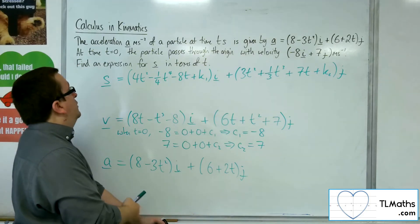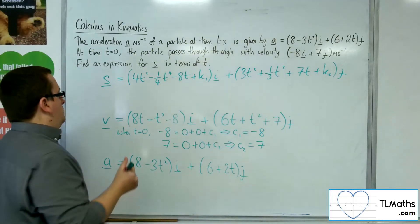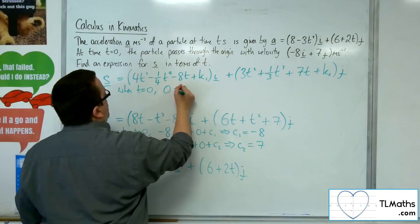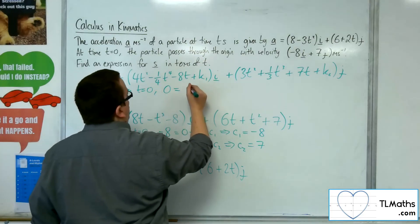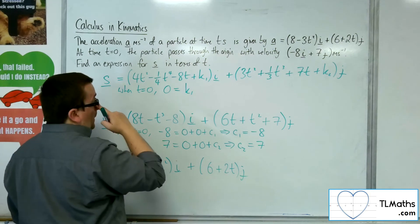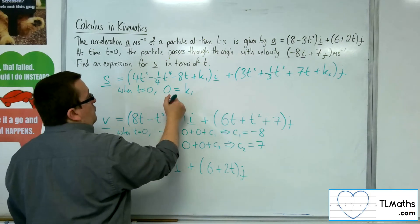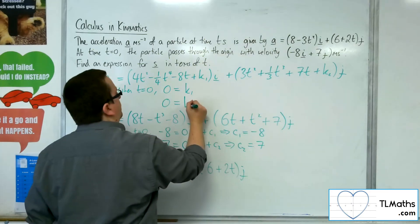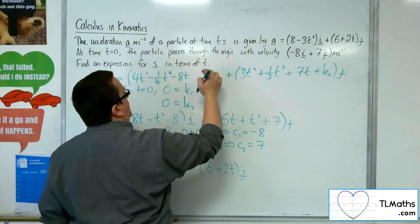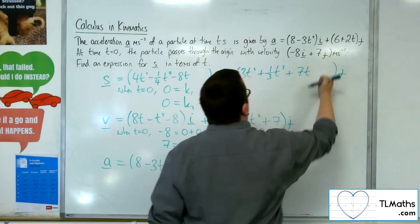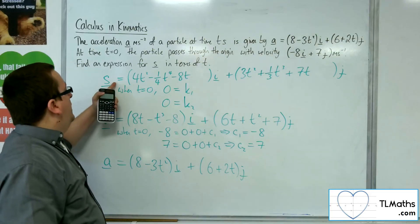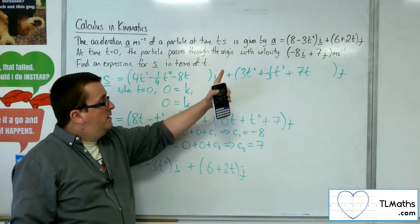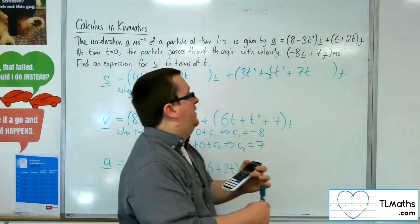I'm told that the particle is passing through the origin when t is 0. So when t is 0, we get 0 equals 0 plus 0 plus 0 plus k1, so k1 is 0. And when t is 0, I get 0 equals 0 plus 0 plus 0 plus k2, so k2 is also 0. So we can remove both k1 and k2. The final displacement expression is 4t squared minus a quarter t to the 4 minus 8t i, plus 3t squared plus a third t cubed plus 7t j.